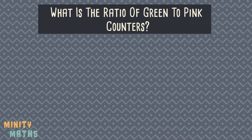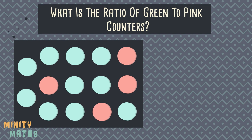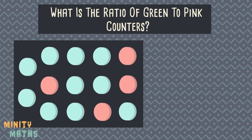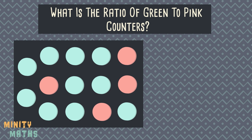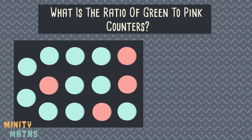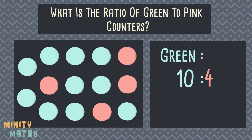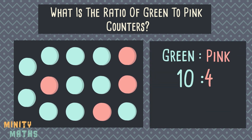See if you can work out the ratio of green to pink counters here. We can do this by counting up how many counters of each colour there are. We have 10 green counters and 4 pink counters. We can write this in the form of a ratio: 10 to 4. But can this be written in a simpler way?